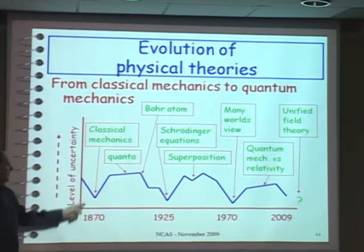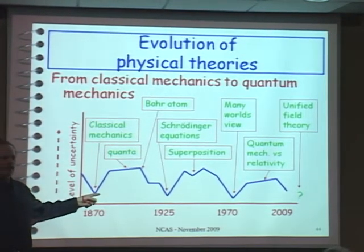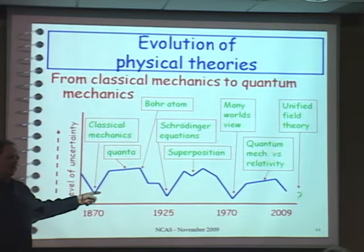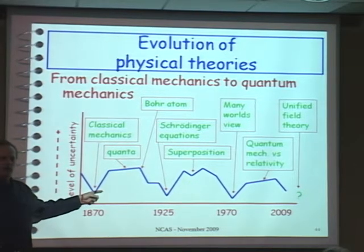In 1870, physics was a solved problem. We had classical mechanics, which explained everything. But then we started getting into electricity and the study of light.